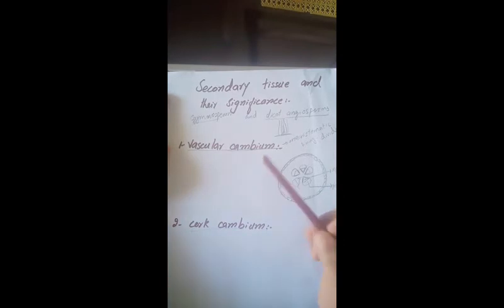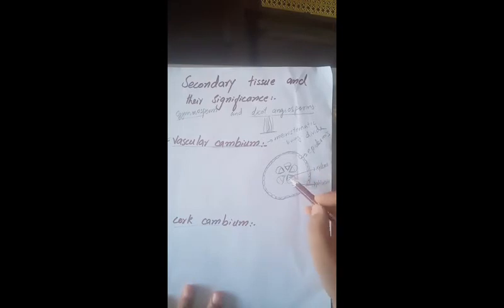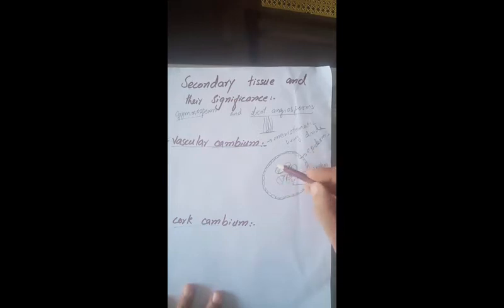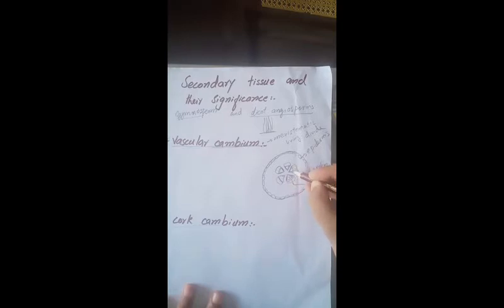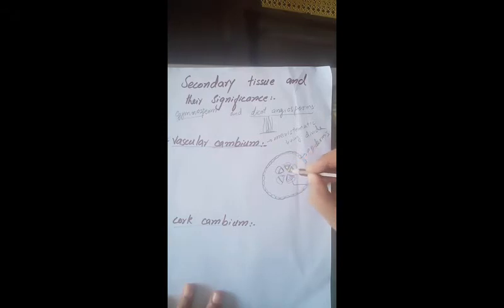Let us learn about the vascular cambium. Look at this diagram — this is the cross section of a stem. The outermost boundary of the stem is the epidermis. This is the vascular bundle, with xylem inside and phloem outside. When the plant gets older, the vascular bundle creates a layer of fusiform initial cells, which are meristematic cells with the ability to divide.